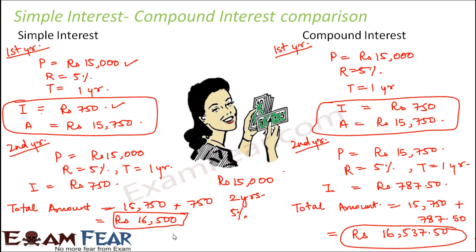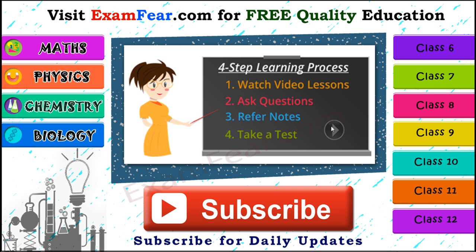Comparing the two: with simple interest you get rupees 16,500, while with compound interest you get rupees 16,537.50 — a difference of rupees 37.50. We have taken very small numbers here, so the difference is also small. But when your principal is 15 lakhs or 15 crores instead of 15,000, the difference becomes much larger. This is how simple interest and compound interest differ — in compound interest you earn more because you get interest on the interest of the previous year as well.